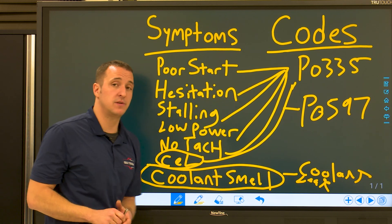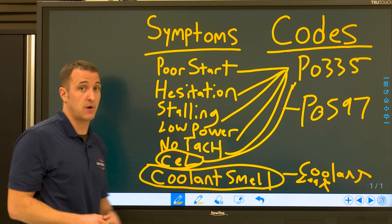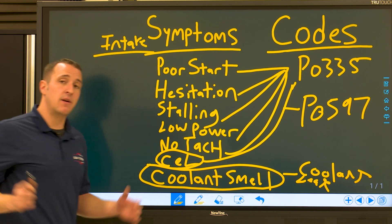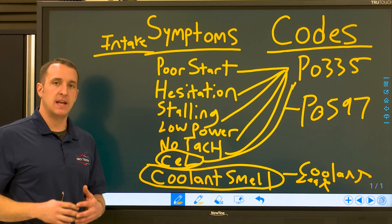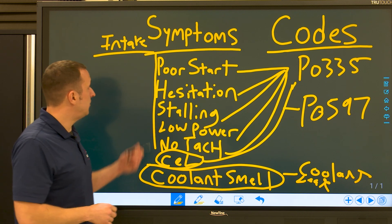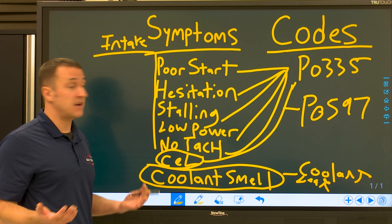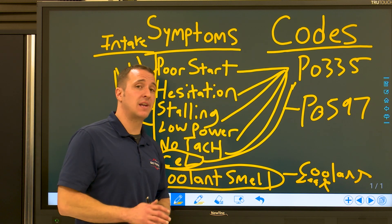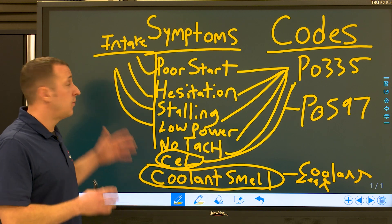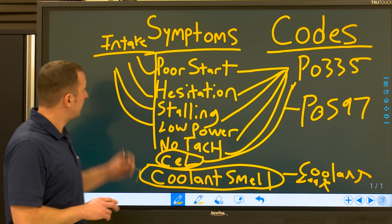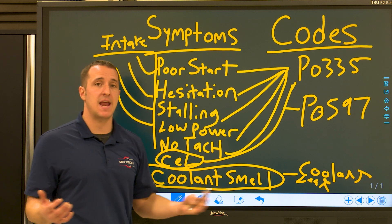We kind of blamed all of our symptoms on this P0335 crank sensor code, but remember, we found that air intake boot. Anytime that air intake boot is cracked after the mass airflow sensor, it's going to allow air to get in unmetered, and that's going to cause fuel trim issues. It can cause a lot of these symptoms — poor start, possibly; hesitation, yes, they are very common to cause a hesitation. The no tach issue is most likely going to be a crankshaft position sensor problem. Good thing we did a visual inspection, because if we had just fixed that crank sensor, the intake boot would have caused some of these symptoms and we would have had a comeback.